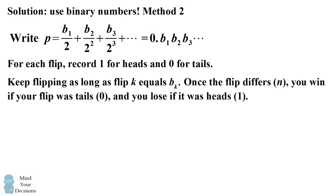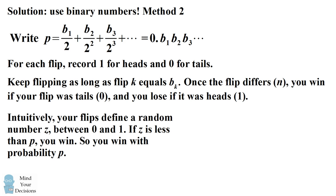This may sound like a strange procedure, but there's an intuitive way to see why it works. Intuitively, the coin flips will define a random number z that's between 0 and 1. If this number z that we get by flipping ends up being less than p, we are winning the game. And if it's more than p, we lose the game. So basically, we're creating with our coin flips a random number between 0 and 1. And if this number ends up being in the interval 0 to p, we're going to win — so we win this game with probability p.